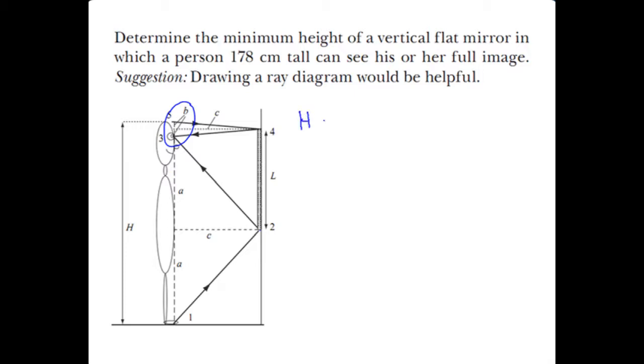So the height of the person is 2a plus 2b. And we can see that the length l is a plus b by looking at the diagram.